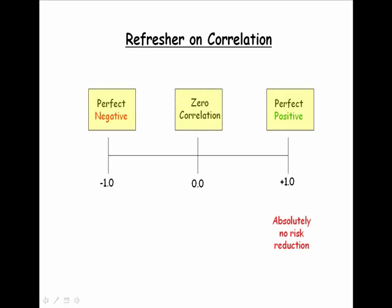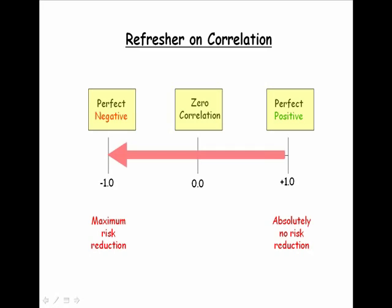From an investment standpoint, if we combine two assets together that have perfect positive correlation, there is absolutely no risk reduction from forming that portfolio. On the other hand, if we found two assets whose correlation is perfect negative, that is the maximum risk reduction. As long as our correlation is less than perfect positive, there are benefits in terms of risk reduction from forming the portfolio. The further away you get from perfect positive correlation, the more risk reduction benefits.